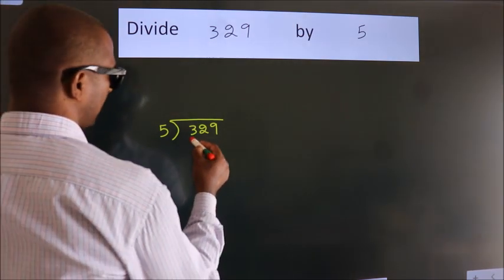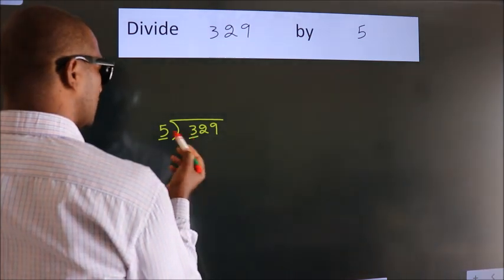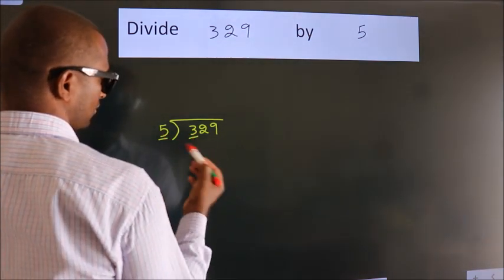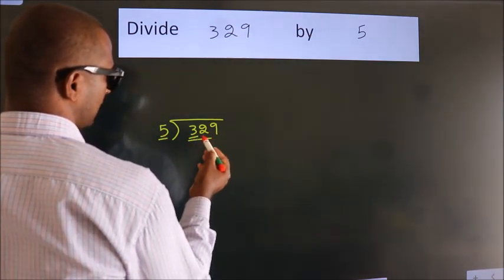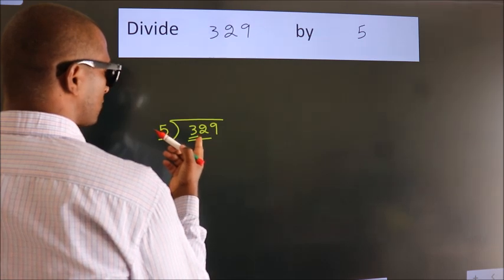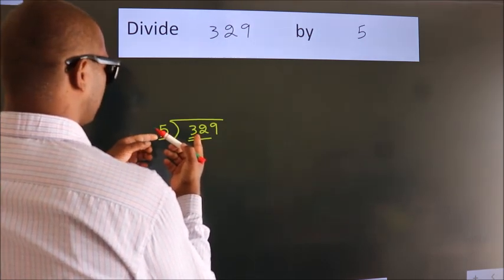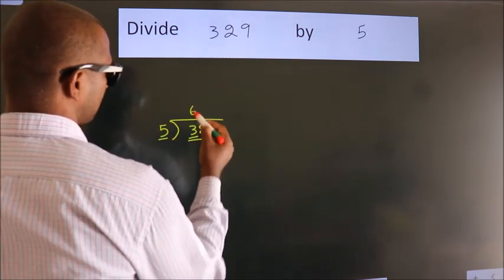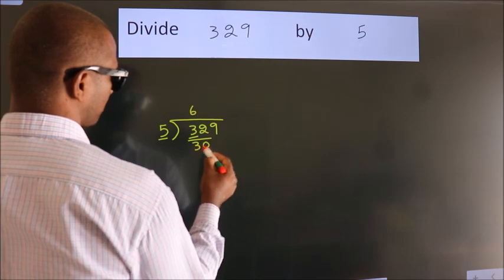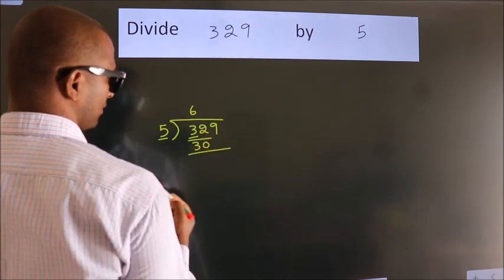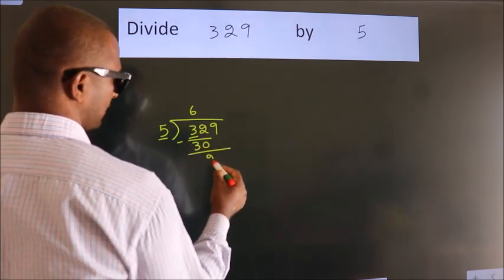Here we have 3. Here 5. 3 smaller than 5, so we should take 2 numbers: 32. A number close to 32 in 5 table is 5, 6, 30. Now we should subtract. We get 2.